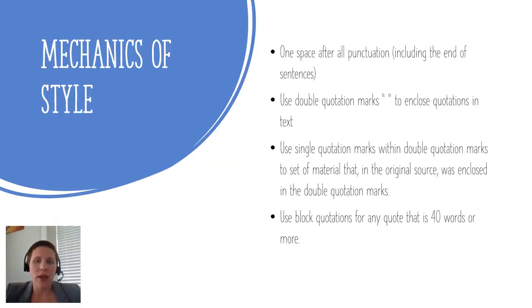Some mechanics of style: there should only be one space after all punctuation, including at the end of sentences. This is different from the 6th edition, which required two spaces. Use double quotation marks to enclose quotations in the text. Use single quotation marks within double quotation marks to set off material that in the original source was enclosed. Basically, if you have a quote within a quote, use single quotation marks.